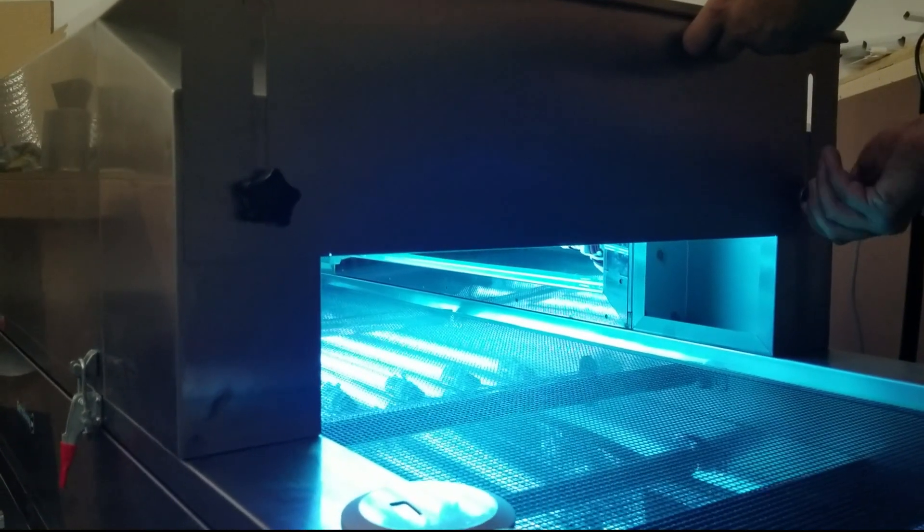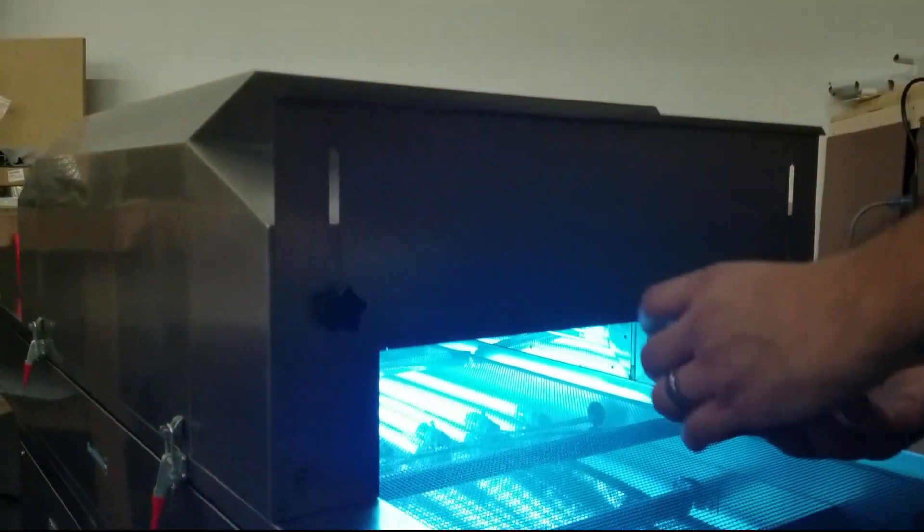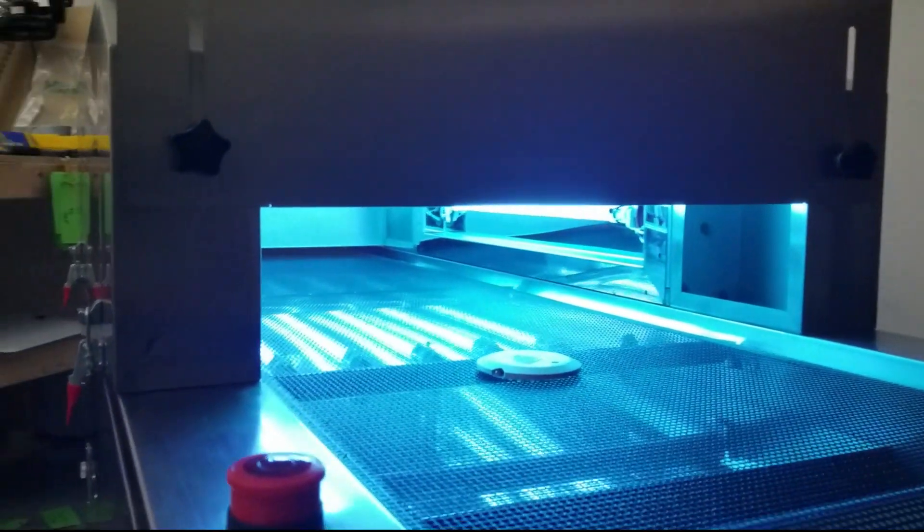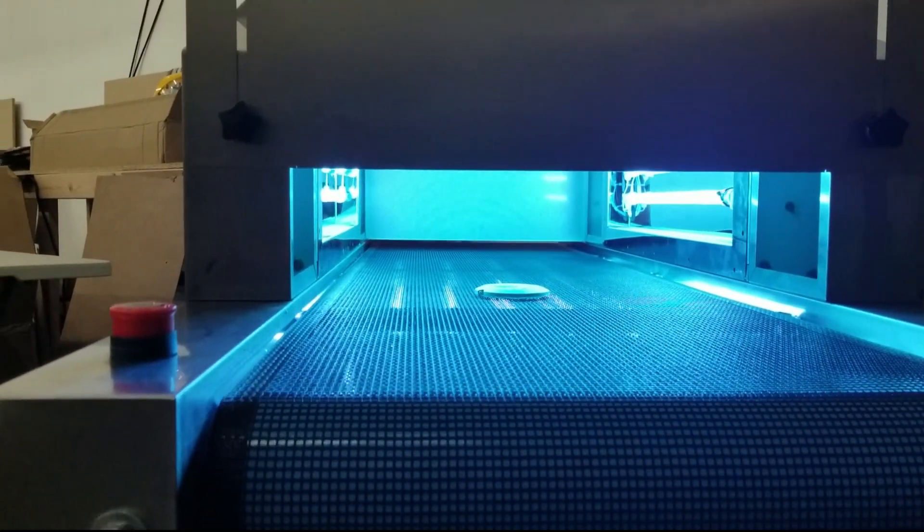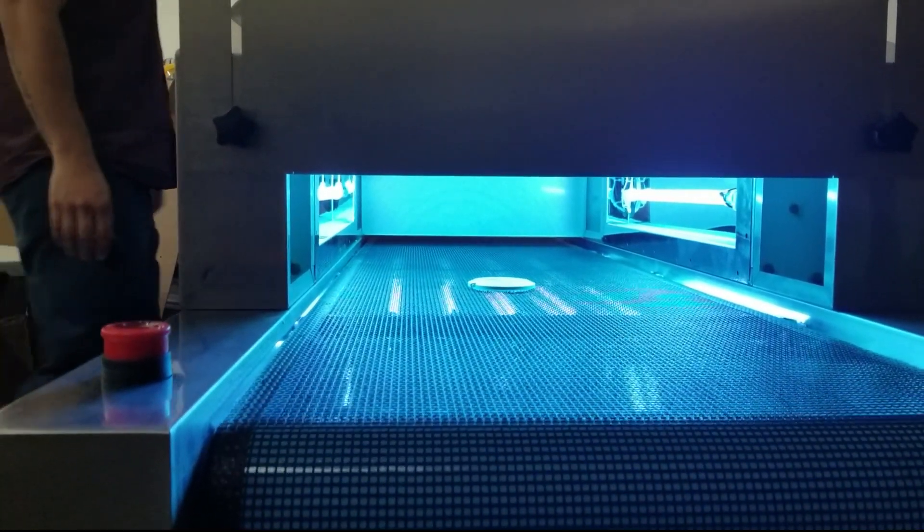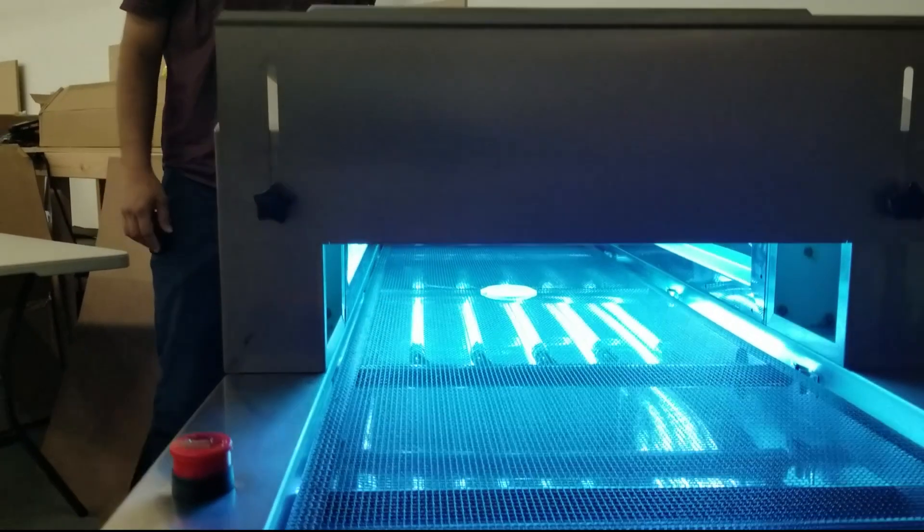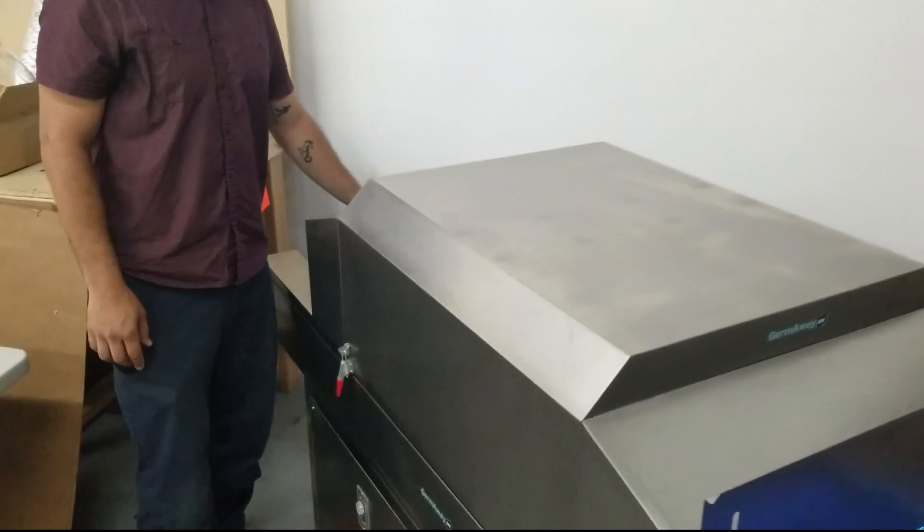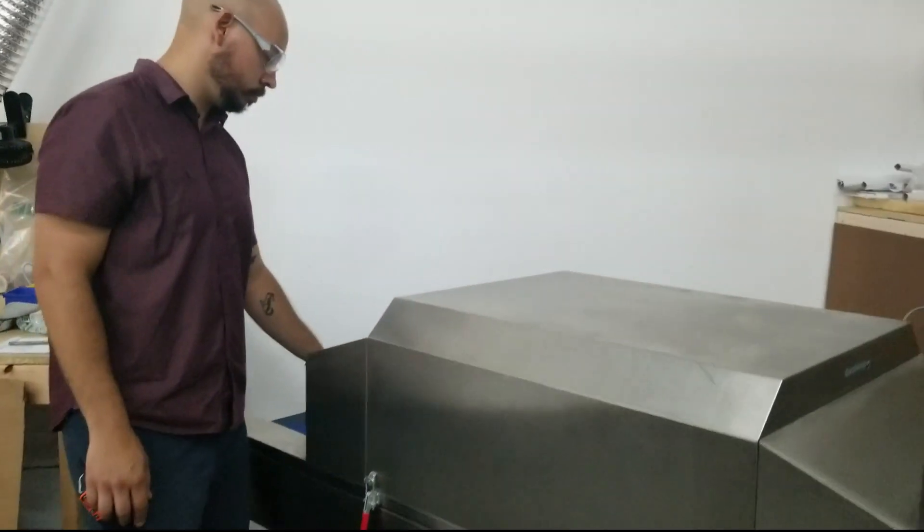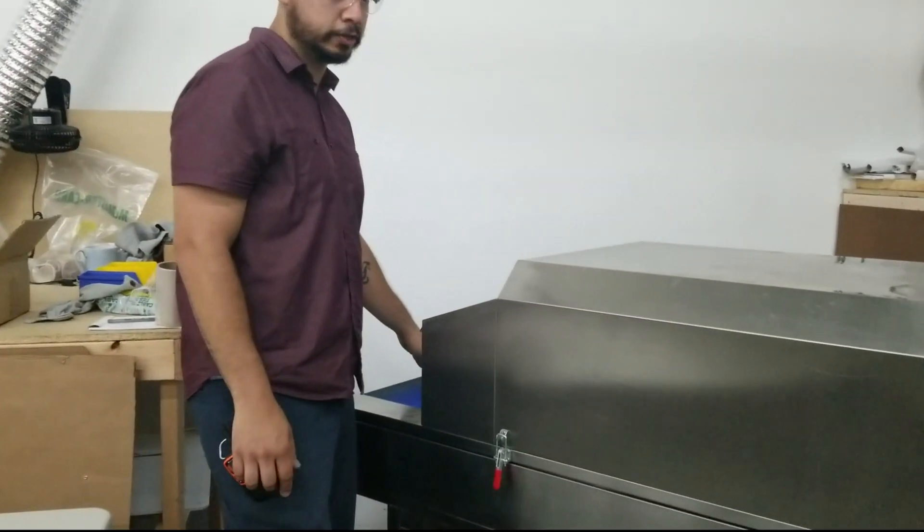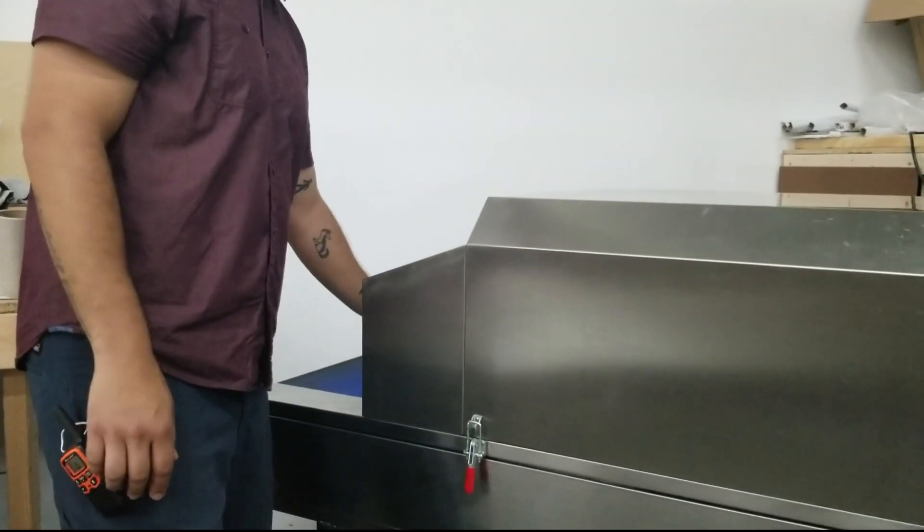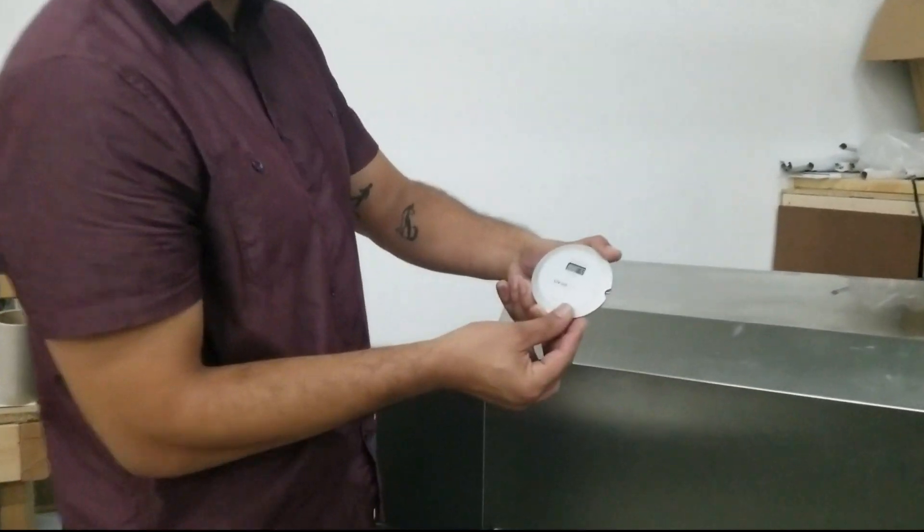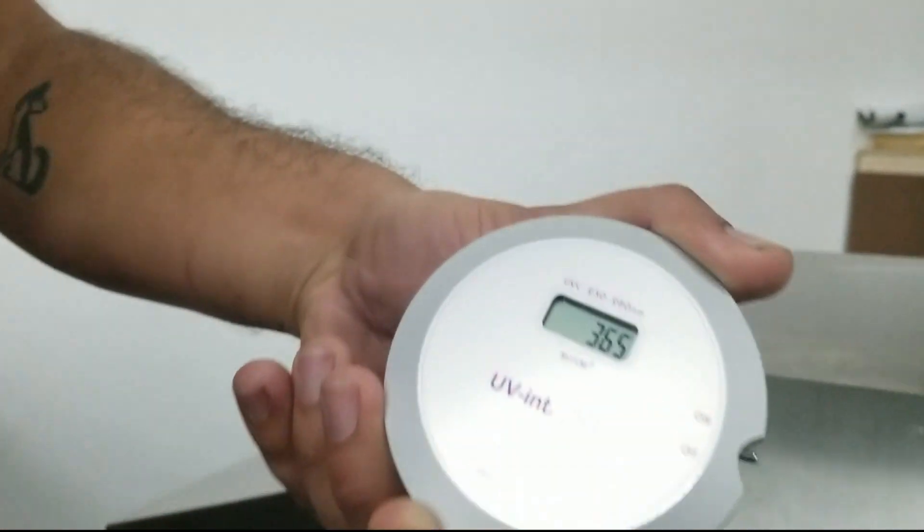So pretend this is a really big one, so you can put it in here. It takes quite a bit at this setting. There it goes. We can stop it. And now we've got 365 millijoules per centimeter squared—quite a bit.